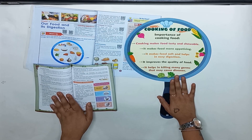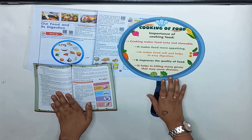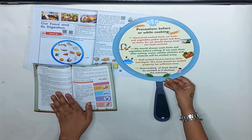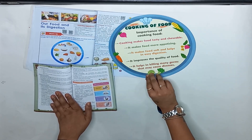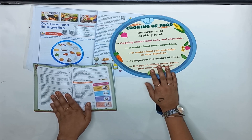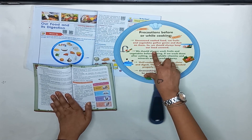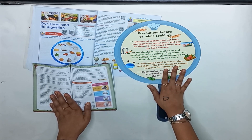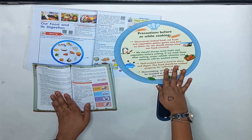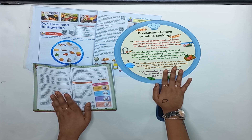Another activity for this chapter is this pan chart. The teacher can display it in the class or ask a student to read it for the whole class. On the front side is the importance of cooking food, and on the back side are precautions before or while cooking. This activity develops critical thinking skills, collaboration, communication, creativity, responsibility, and citizenship.